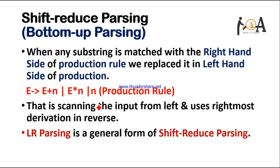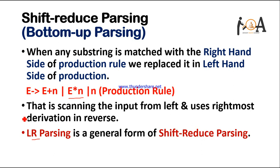When any substring is matched with the right-hand side of a production rule, we replace it with the left-hand side of the production. Suppose the production rule is: E derives E plus N, or E multiply with N, or N. We are scanning from the left side of the given string and using the right-hand side of the production rule — that's why it is called LR parsing.